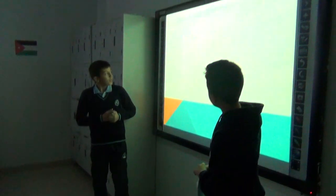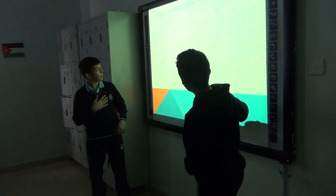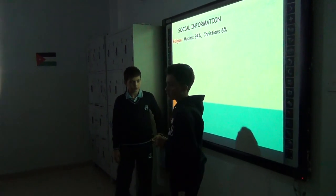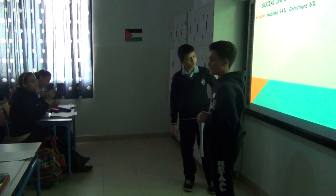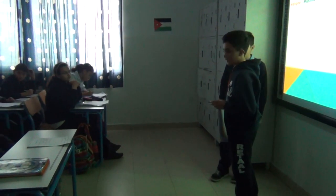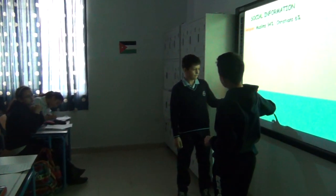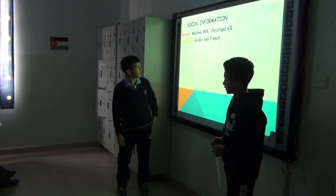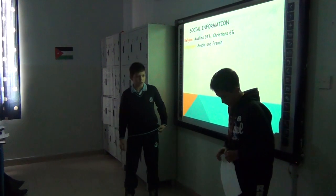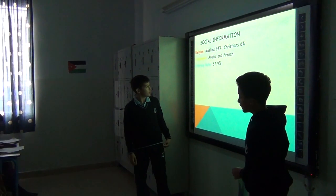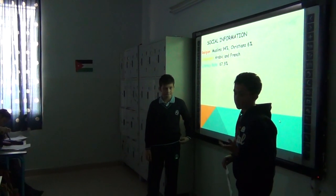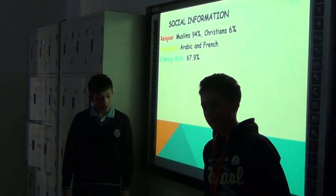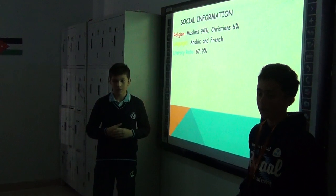This is social information. Muslims occupy most of Djibouti by 94% and Christians by 6%. The languages in Djibouti are Arabic and French. The literacy rate, which means the people who can read and write, is 67%.